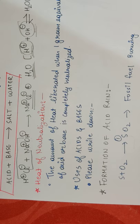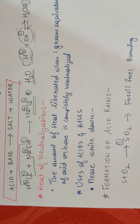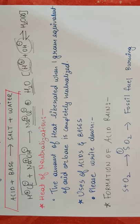Moving further we have heat of neutralization. So the amount of heat liberated when 1 gram equivalent of acid or base is completely neutralized, it becomes pH 7. We call it heat of neutralization. The amount of heat is released.